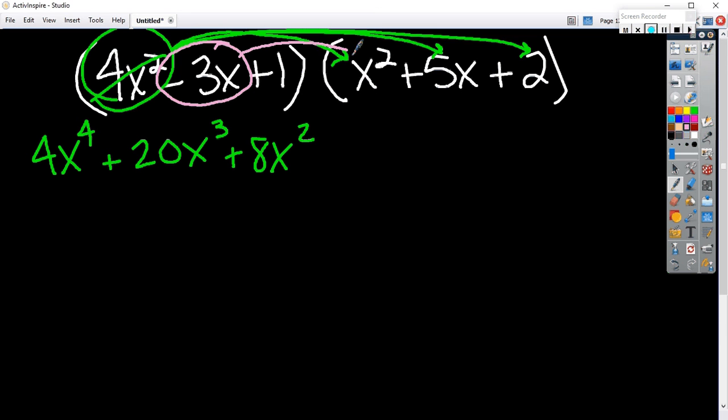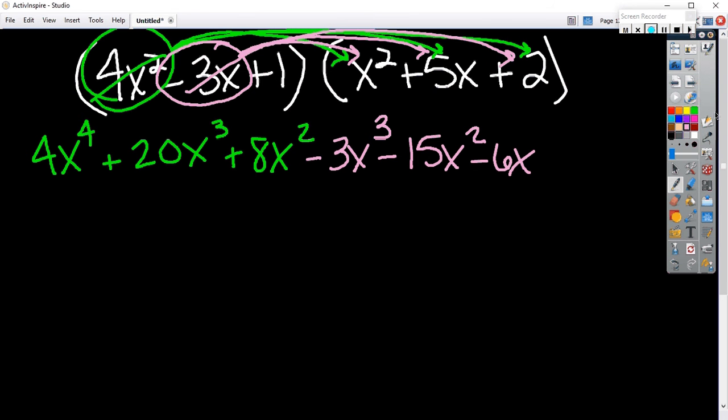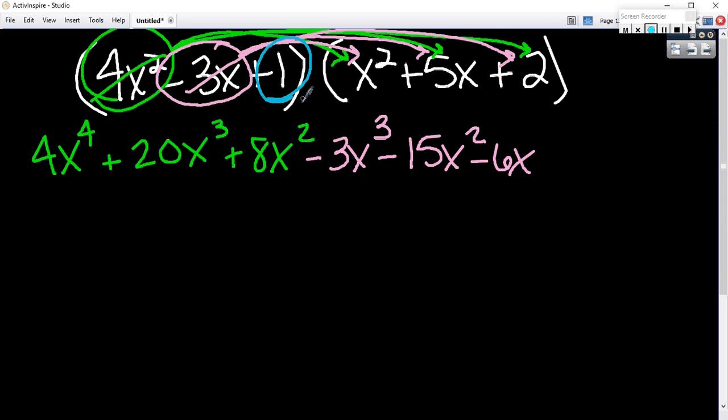Negative 3x times x squared is minus 3x cubed. Negative 3x times 5x is minus 15x squared. Negative 3x times 2 is minus 6x. Am I done? No. I got a whole other term there on the end. One times x squared is x squared. Plus 5x. Plus 2. Now, I get to combine my like terms.